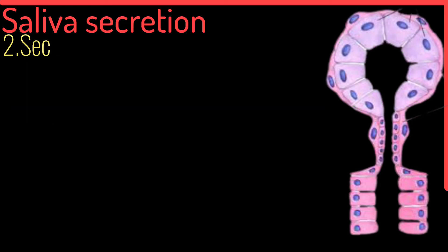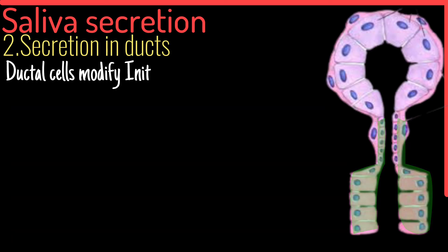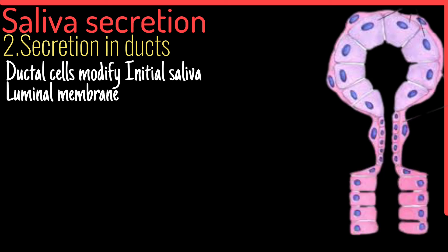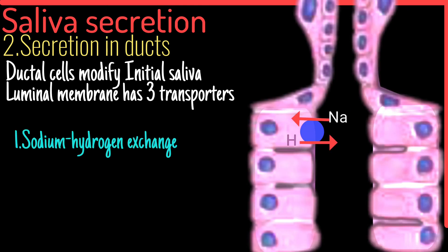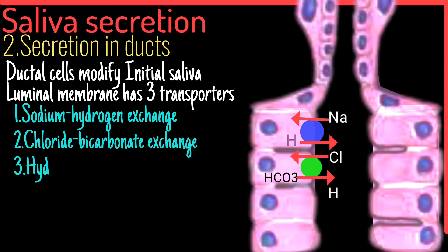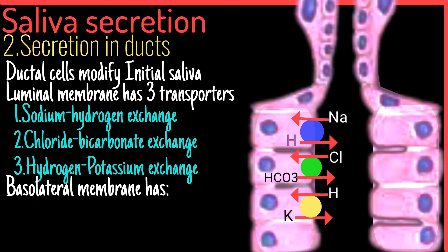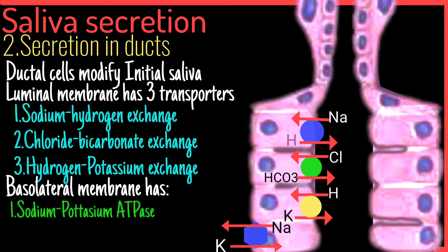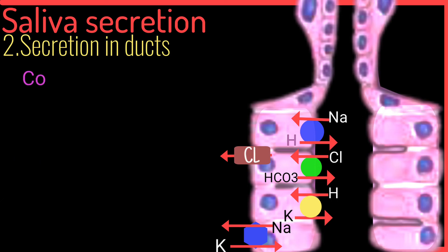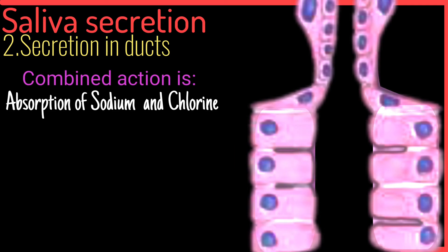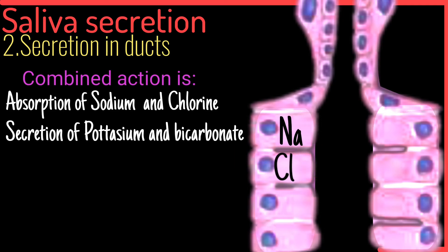The next step is secretion in the ducts. The ductal cells modify the initial saliva. The luminal membrane of the ductal cells contains three transporters: sodium-hydrogen exchange, chloride-bicarbonate exchange, and hydrogen-potassium exchange. The basolateral membrane contains sodium-potassium ATPase and chloride channels.